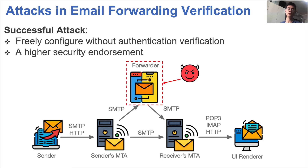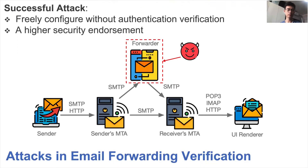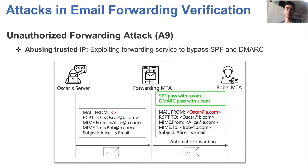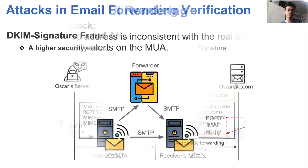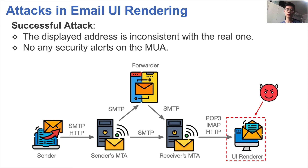In the email forwarding stage, we consider an attack successful if the attacker can configure a forwarded email to any account without modification. The forwarding service may also give the forwarded email a high security endorsement. As shown in the figure, we can abuse the sender's trusted IP resources to bypass SPF and DMARC. We can also exploit forwarding services to obtain a high security endorsement, such as a legitimate DKIM signature. The last and most critical part of the email system is ensuring that emails are rendered correctly. In this stage, an attack is successful if the displayed address is inconsistent with the real one, while no security alerts appear in the MUA.